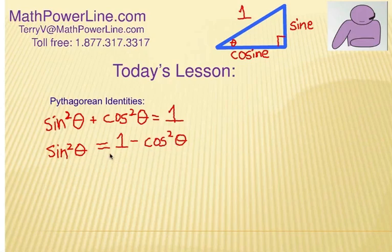Sometimes, that's the substitution or the identity we could use in an expression. What about we take this original and subtract sine squared theta from each side? Now, we have cosine squared theta equals one minus sine squared theta.